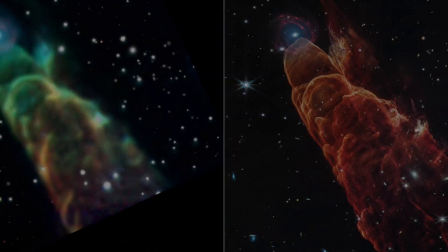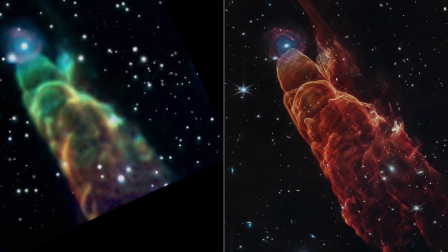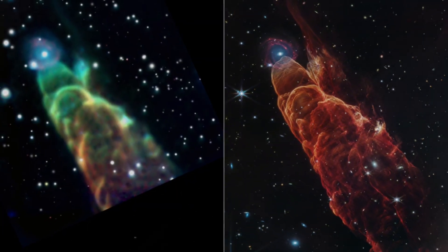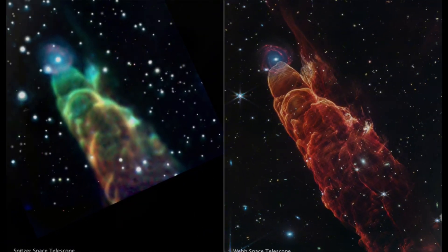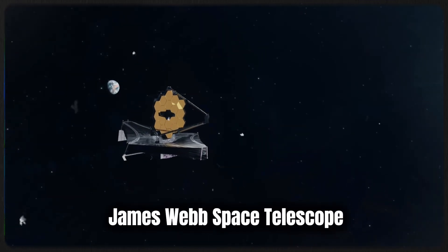Meet the dazzling spectacle of Herbig Haro 49x50, an energetic outflow from a young forming star nestled right in front of a distant multicolored spiral galaxy. It's an awe-inspiring scene captured by none other than NASA's James Webb Space Telescope.